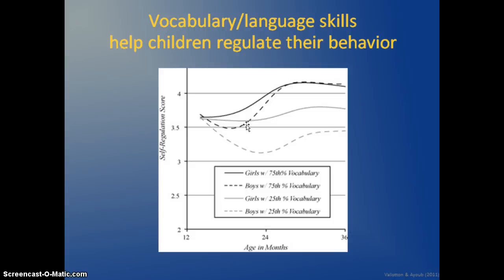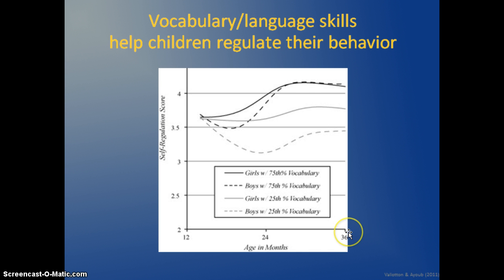Another thing we know about executive functions is that vocabulary and language skills help children regulate their behavior. Children with 75th percentile vocabulary — strong vocabulary capacities — show significantly better self-regulation scores between 12 and 36 months compared to children with lower vocabulary abilities, particularly boys with lower vocabulary abilities.